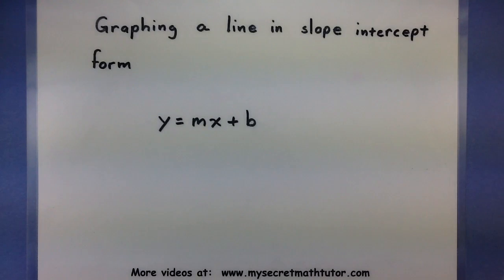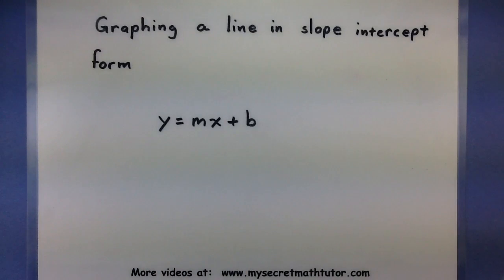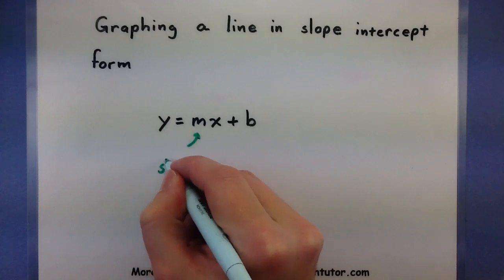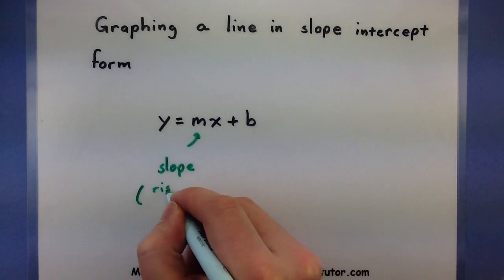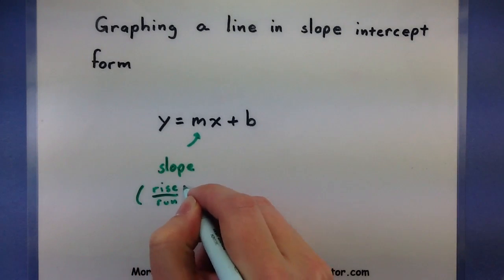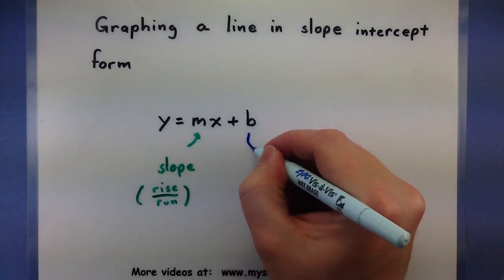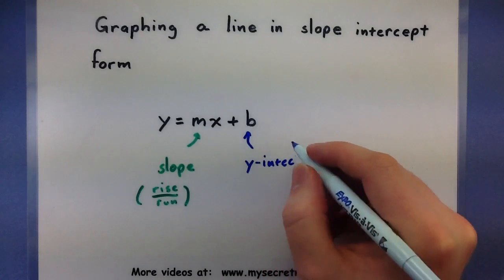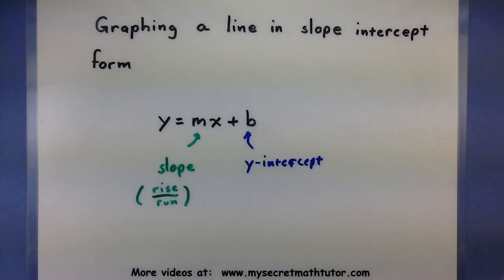A line in slope-intercept form looks something like this: y equals mx plus b. The m and the b are there to help you identify some key things. The m, when written in this manner, stands for the slope of the line — remember that this gives you the rise over the run. The b in this form gives you the y-intercept, so it tells you where the line crosses the y-axis.